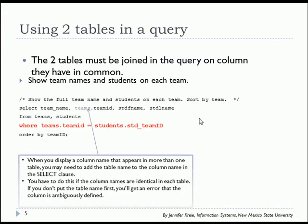I'm showing teams dot team ID here which isn't actually necessary because the primary key is team ID and the foreign key is student std team ID. If the names in both tables are identical you will have to specify which table you want the select clause to use. This is called a fully qualified column name when you must specify the table name followed by a period and then the column name.